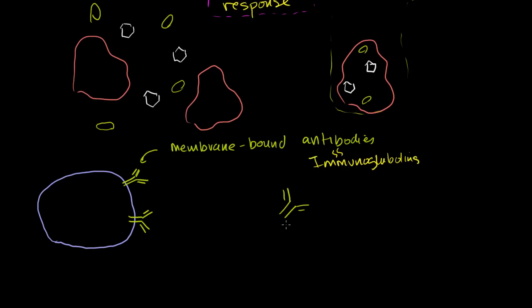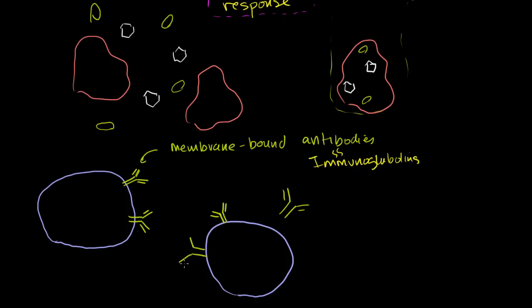What's really interesting about these membrane-bound antibodies and B cells in particular is that each B cell has one type of membrane-bound antibody on it. Let me draw another B cell — it's also going to have antibodies, but those antibodies are going to be different. From one B cell to another, there's a variable part on this antibody that can take on a bunch of different forms.